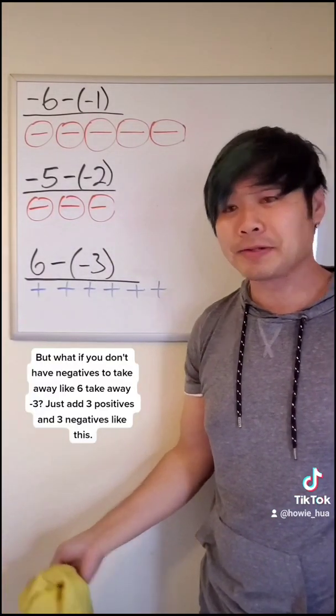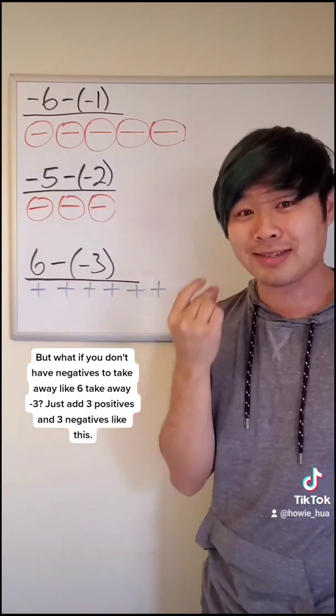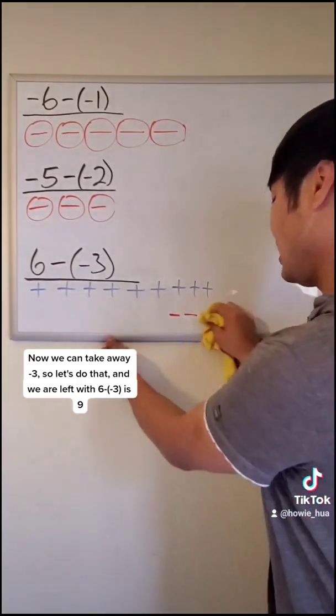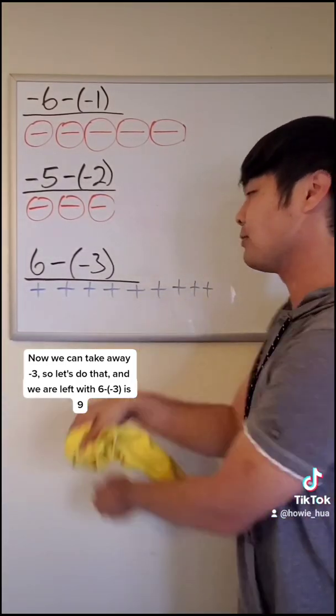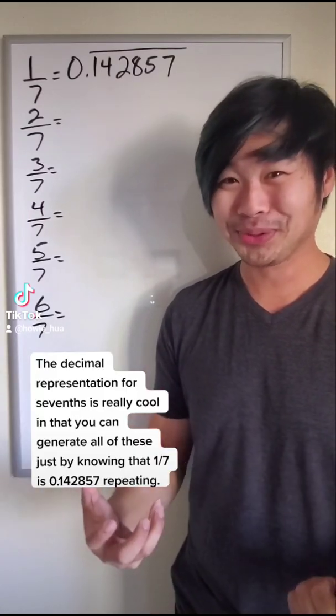But what if you don't have any negatives to take away, like six take away negative three? Just add three positives and three negatives like this. Now we can take away negative three. So let's do that. And we are left with six take away negative three is nine.